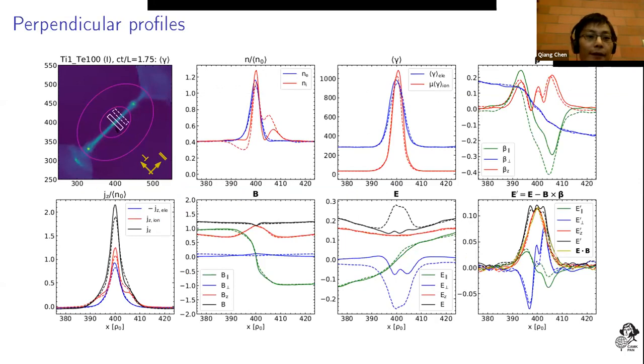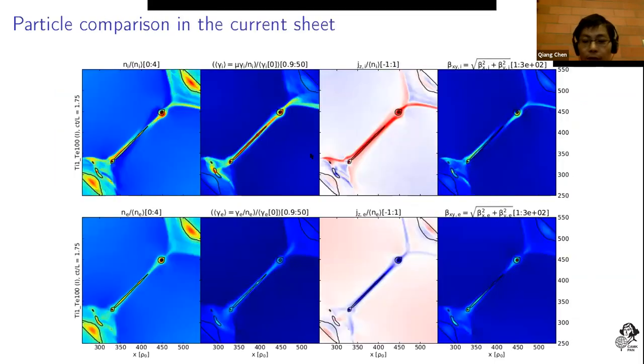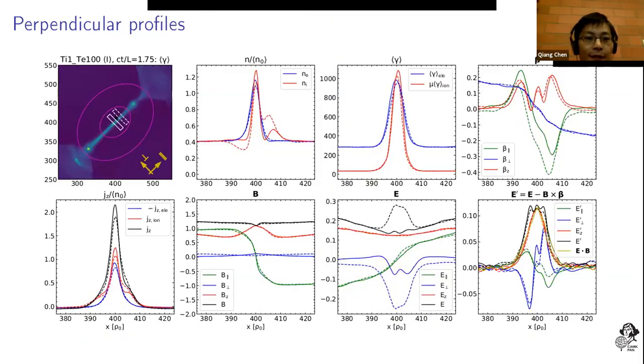I'll show you the current layer produced during the instability progress. Across the current layer we measured the perpendicular profiles of these parameters in two water boxes. For the particle number density, particle energy, and the current density, they all look like a spike in the middle with broader wings.